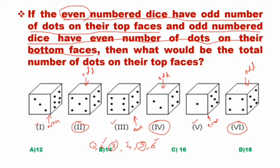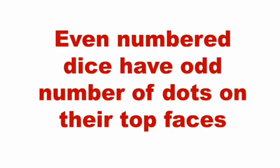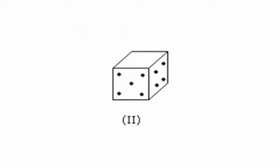The answer options are 12, 14, 16, and 18. The first condition is that even-numbered dice have an odd number of dots on their top face. For dice 2, the top face will be 1 or 3. Here we see four dots and five dots are already placed, so the remaining numbers are 2, 6, 1, and 3. Our main concern is finding opposite pairs whose sum equals 7.